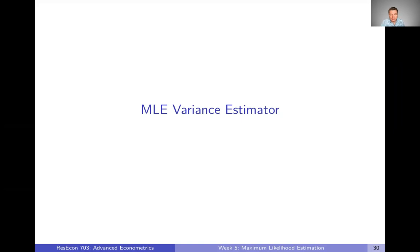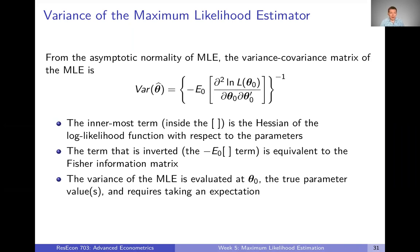We just talked about all those nice properties of the maximum likelihood estimator, one being that it's asymptotically normal with a certain variance. In this video we're going to dig into that variance and the variance estimator a little bit more. We don't just want to know what our parameters are — we also want to know the variance of those estimators so we can make inference, understand how precisely a parameter is estimated, whether it's statistically significant, and what the confidence interval is. That's why we care about not just the MLE itself but also its variance.